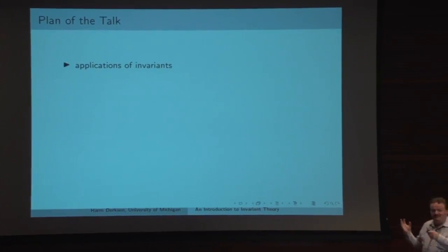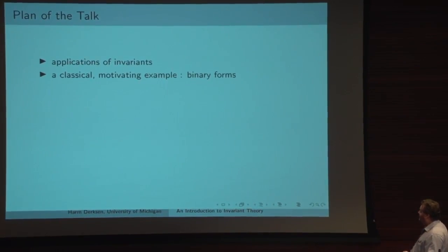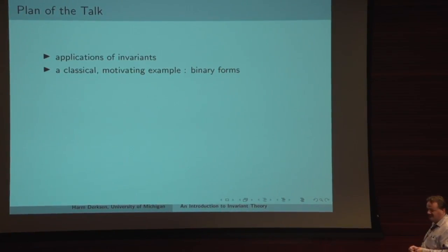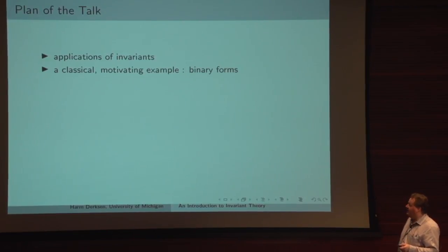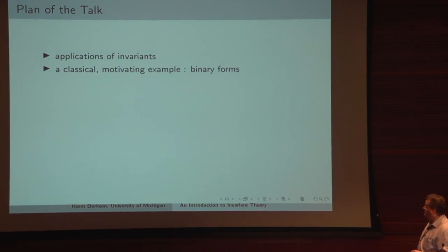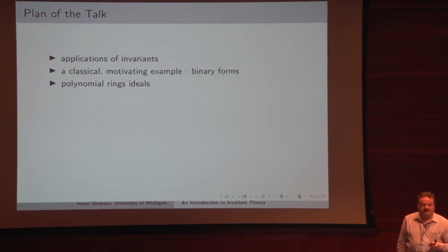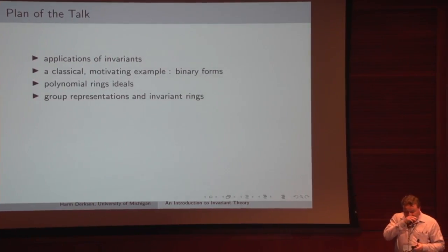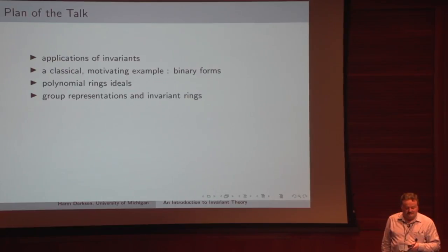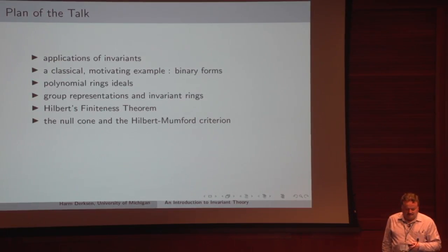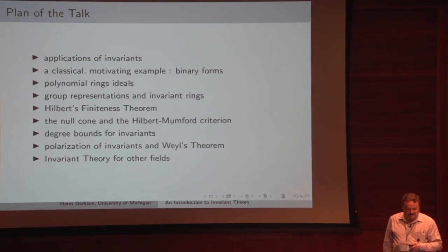I will give an introduction to invariant theory. Let me first give an overview of what I'm going to talk about. First, I will talk about invariants very generally, and then I'm going to talk about a specific example as a motivation — namely a very classical example of binary forms that was studied in the 19th century. Then we'll start with the more formal setup: polynomial rings and ideals, invariant rings, and then some specific results in invariant theory.